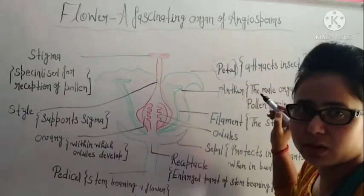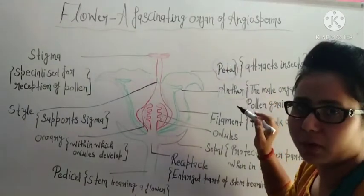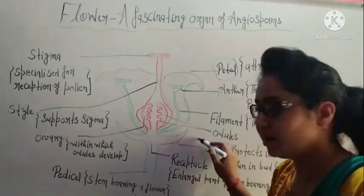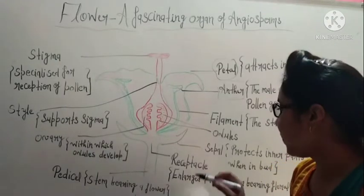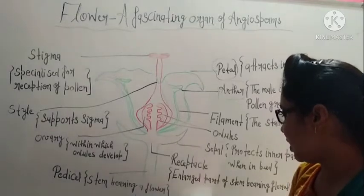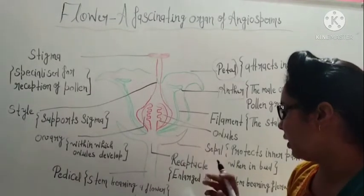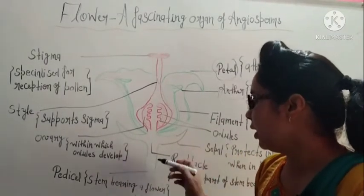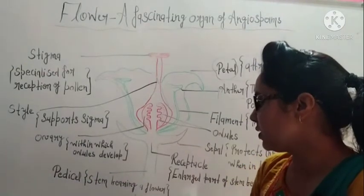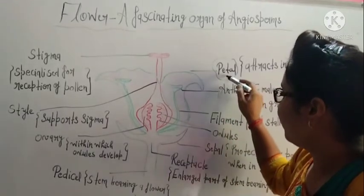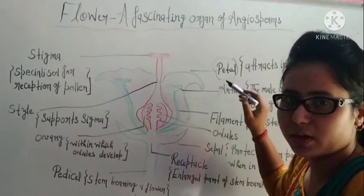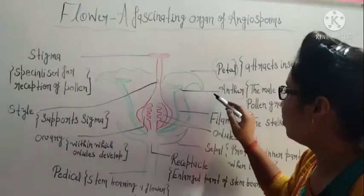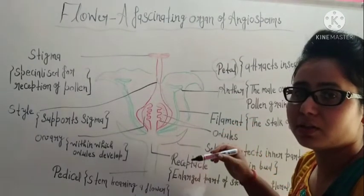When we talk about a single petal, we call it a petal, but when it comes in a group the term used is corolla. Similarly, a single sepal is called a sepal, but the collection of many sepals is called calyx. You will also see the receptacle — the enlarged part of the stem bearing floral parts. Below the receptacle you will see the peduncle, which is the stem bearing the flower. So petals and sepals become your accessory parts of a flower, which do not directly participate in sexual reproduction.